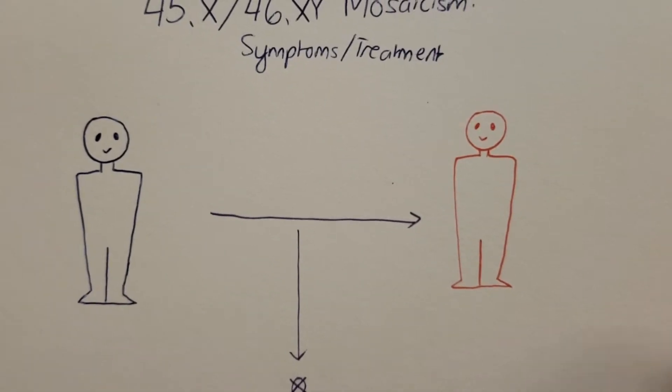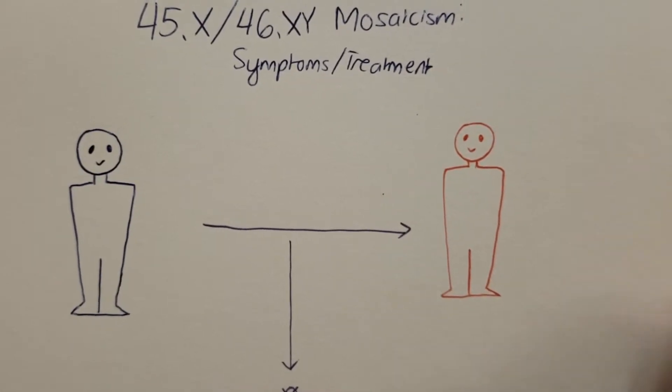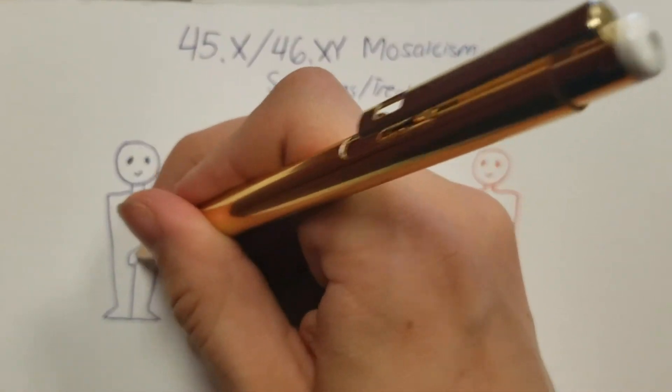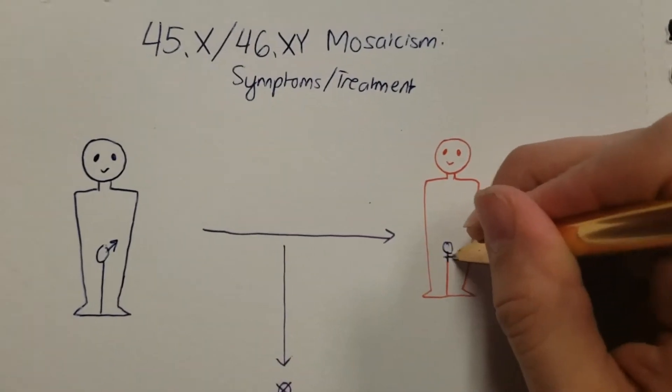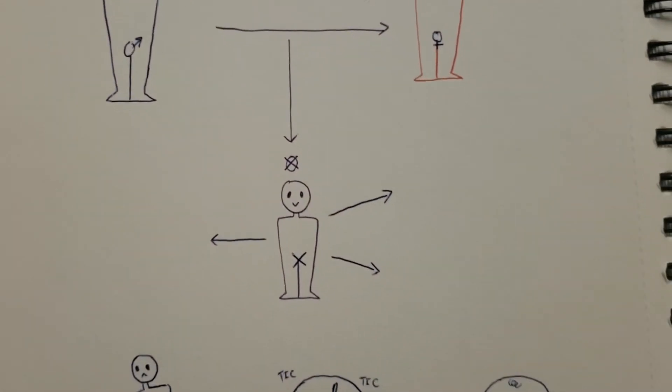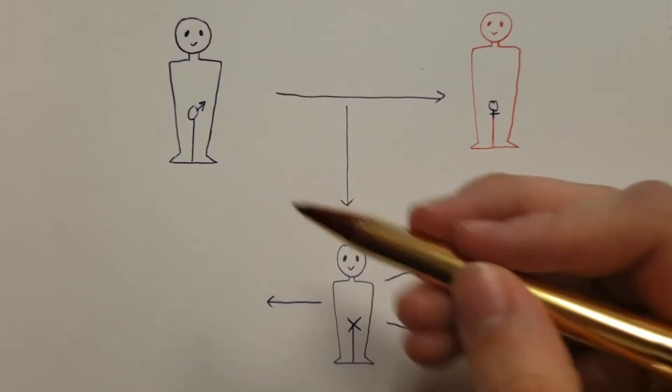The genotype caused by 45X 46XY mosaicism can yield a wide range of phenotypes. Most patients present as male, that is having testes, but others can be phenotypically female or sexually ambiguous by having what is known as bilateral streak gonads. Basically the genitalia of these individuals are neither male nor female but rather a mix of the two.